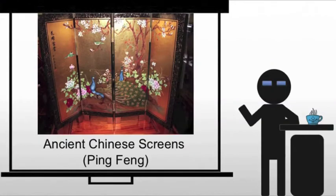Ancient Chinese screens or room dividers are going to be really important in Chinese society. After all, the homes tend to be fairly open and fairly sparse, so there's very little to separate you from everyone else. They serve as everything from status symbols to privacy barriers.